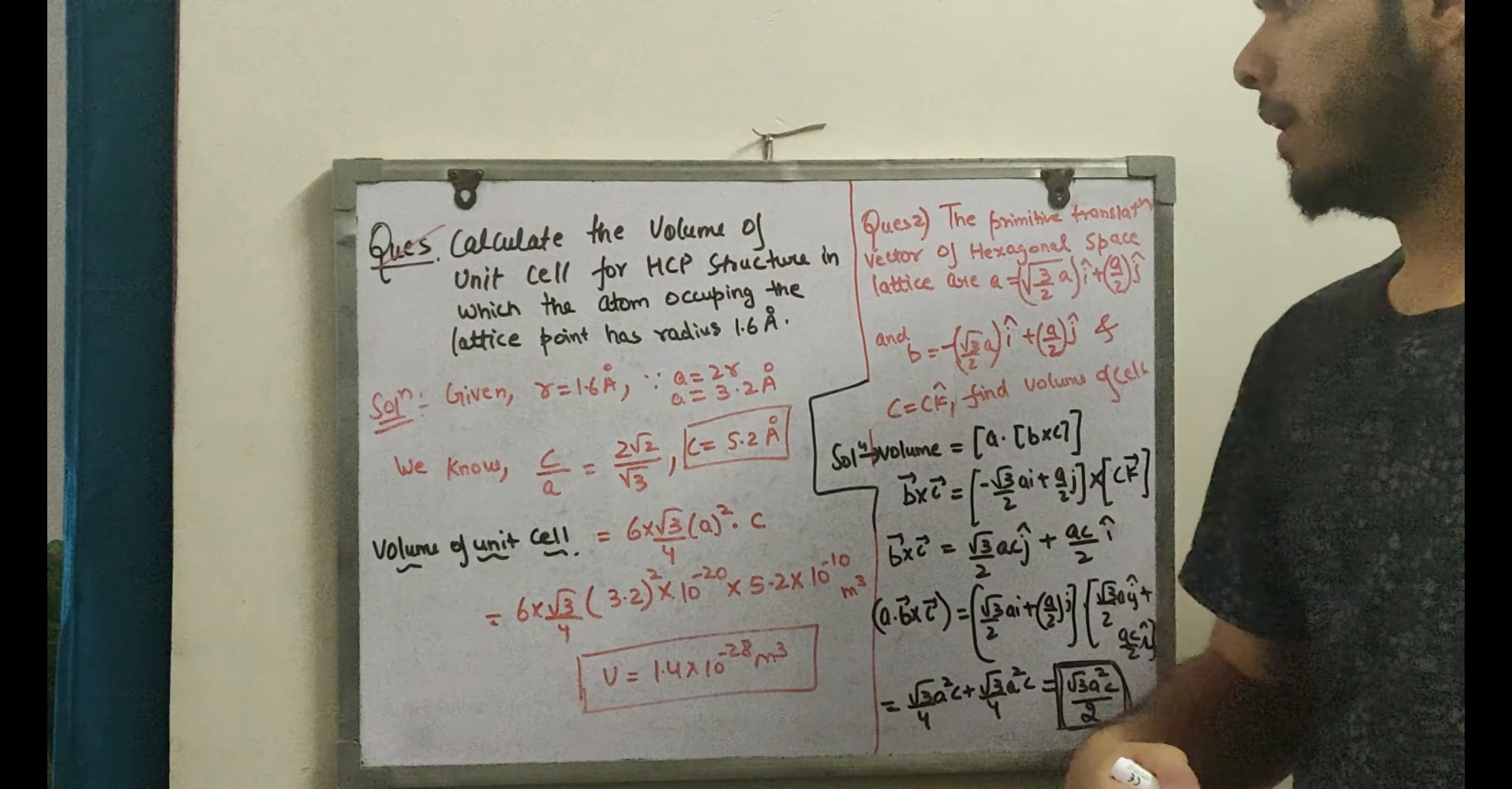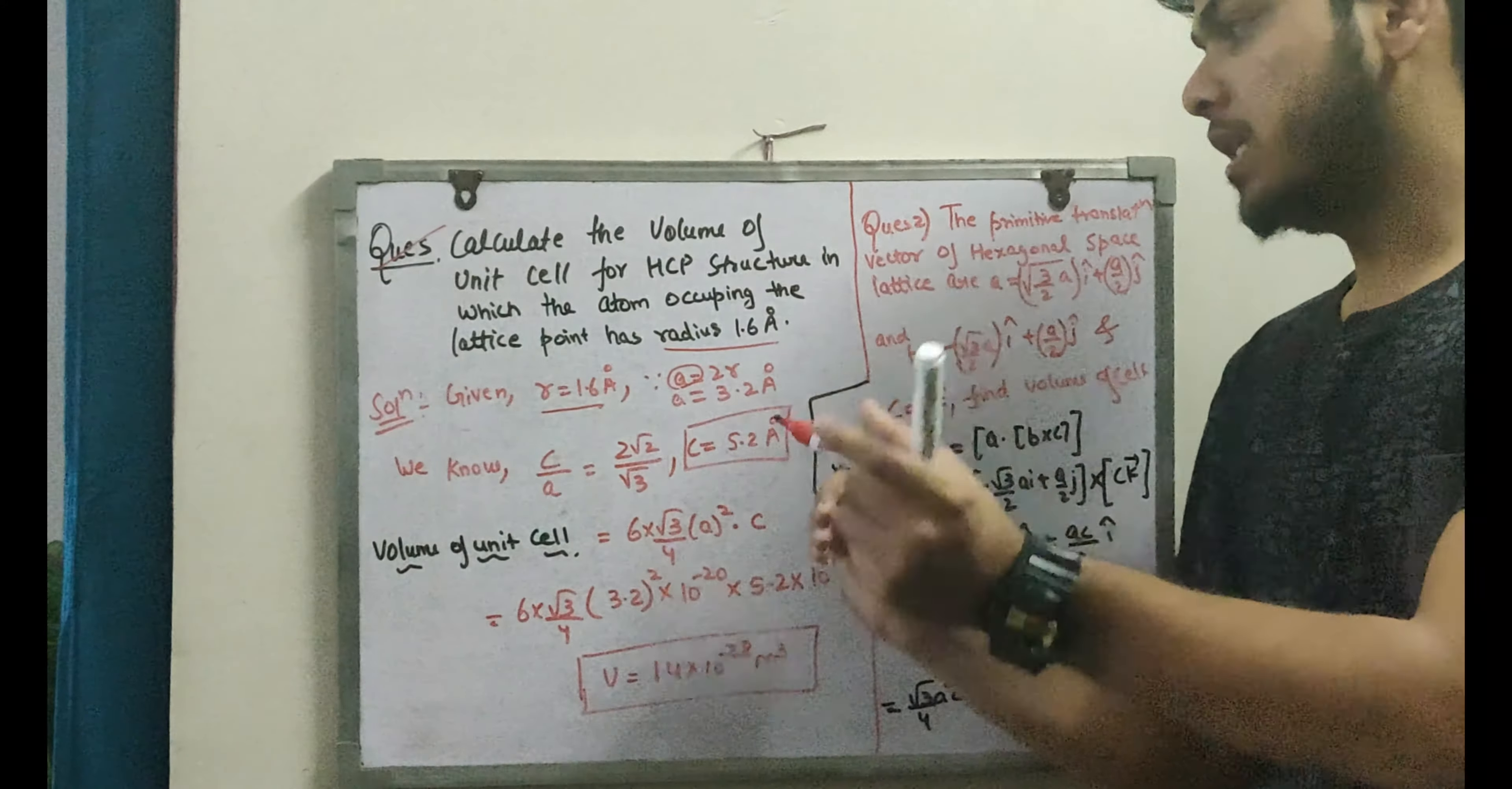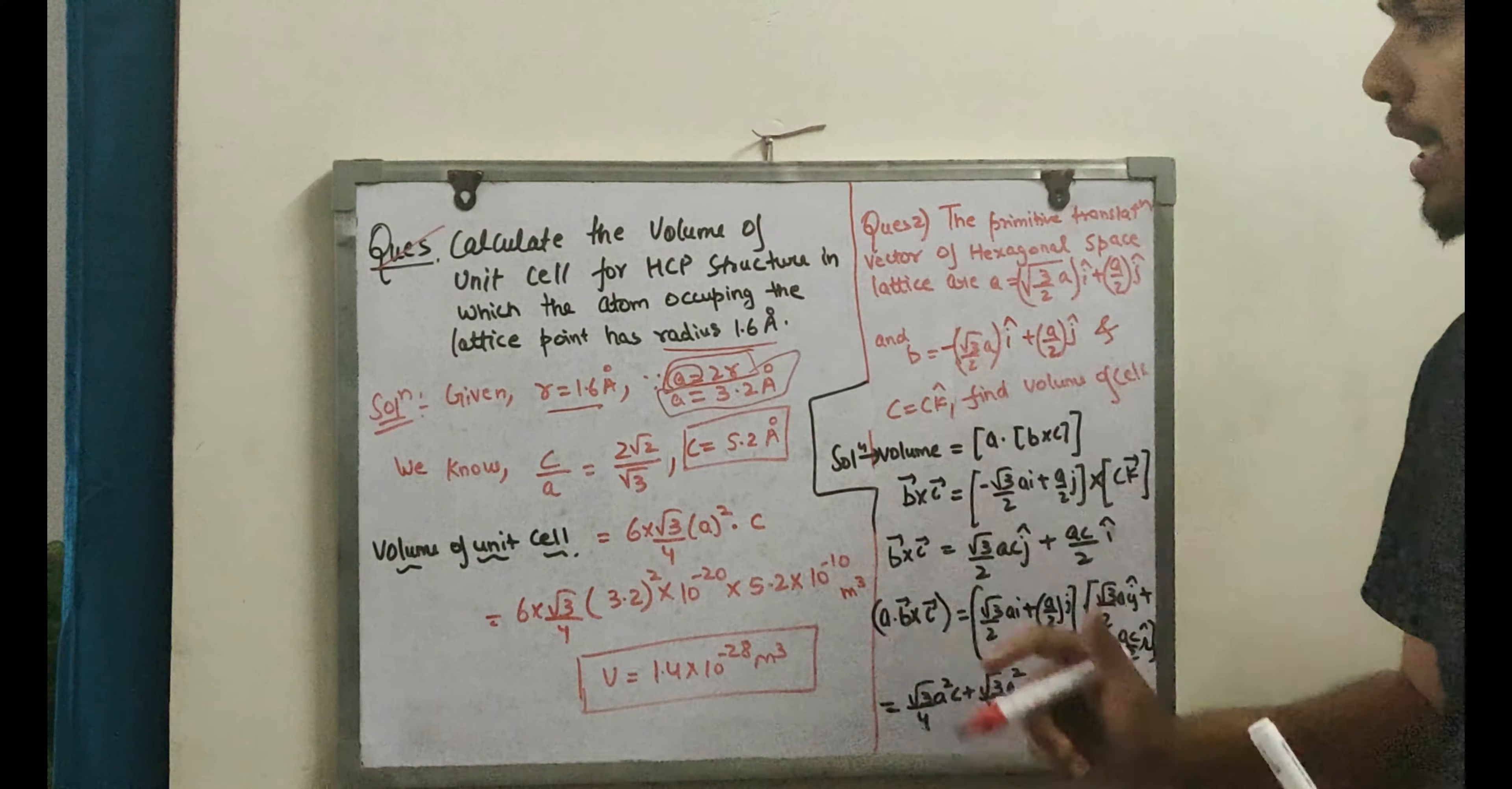Let's see the question: Calculate the volume of unit cell for HCP structure in which the atom occupying the lattice point has radius 1.6 angstrom. So we have radius given as 1.6. Now I know that if radius is given, I need edge length. What is edge length? When we studied HCP, we learned that edge length A equals 2R. So A equals 2R equals 3.2 angstrom, which is 3.2 times 10 to the power minus 10.